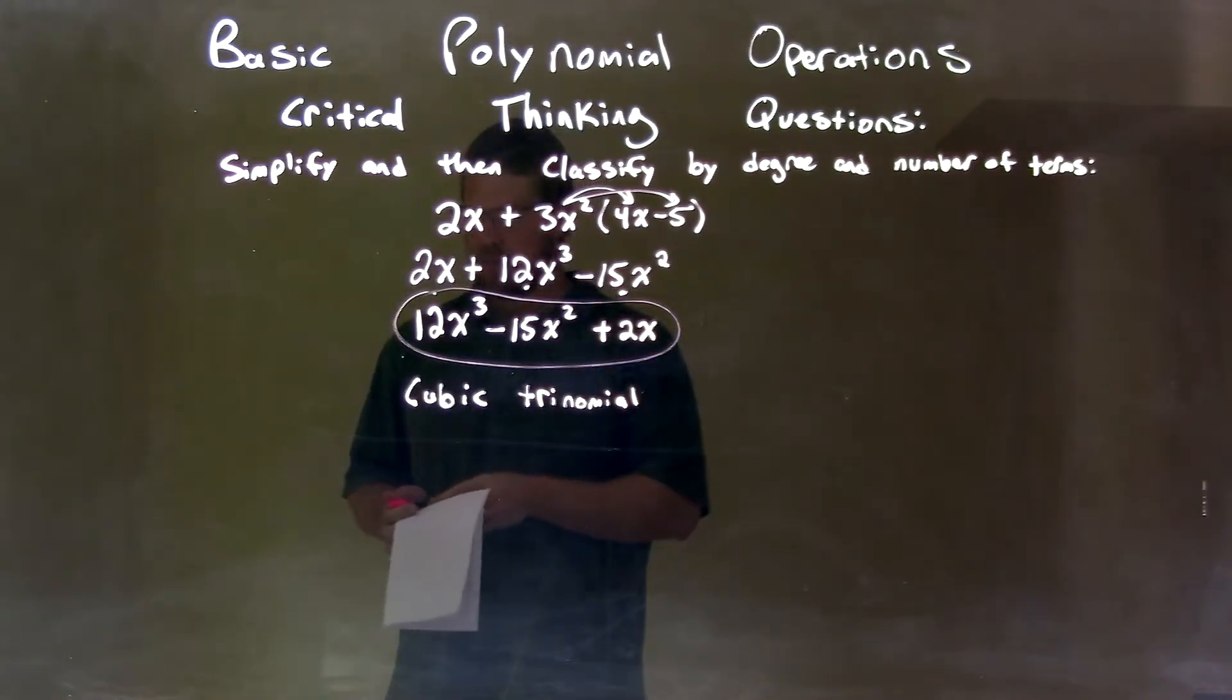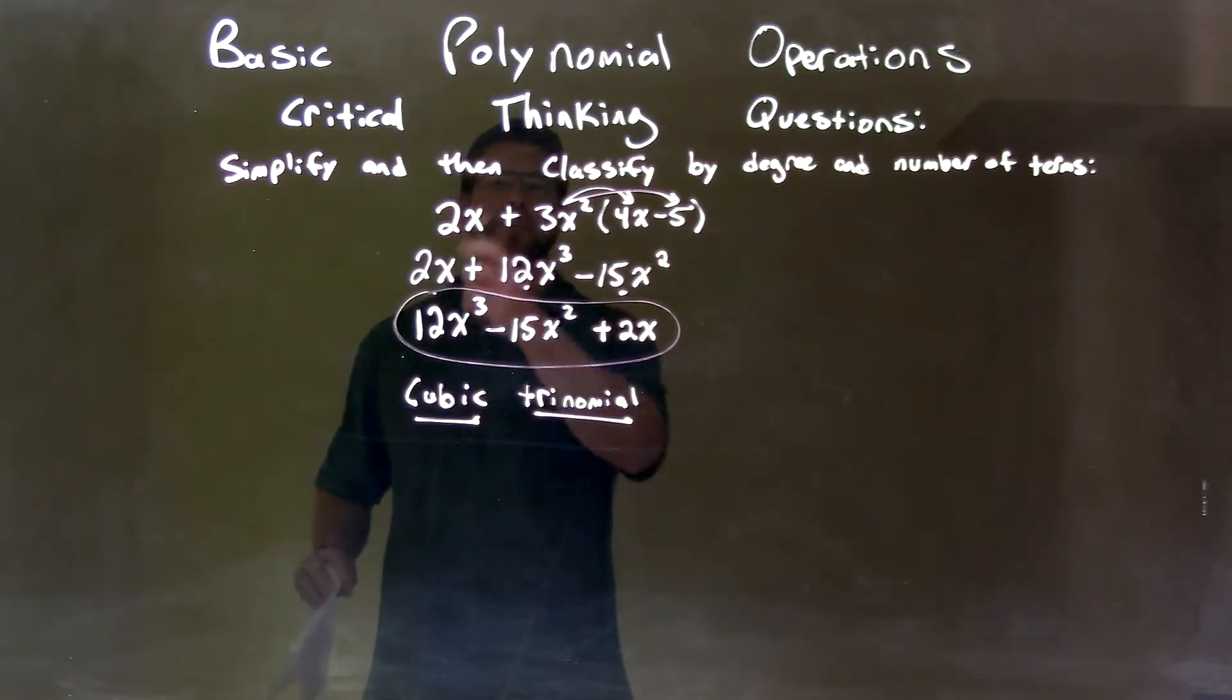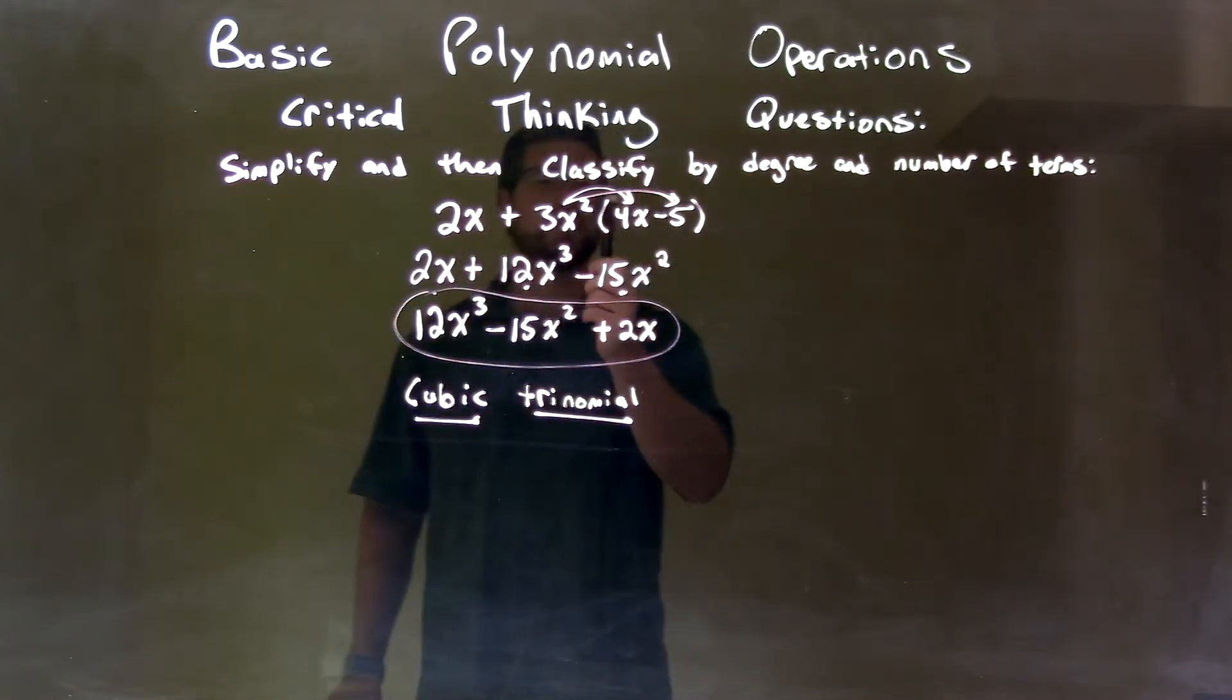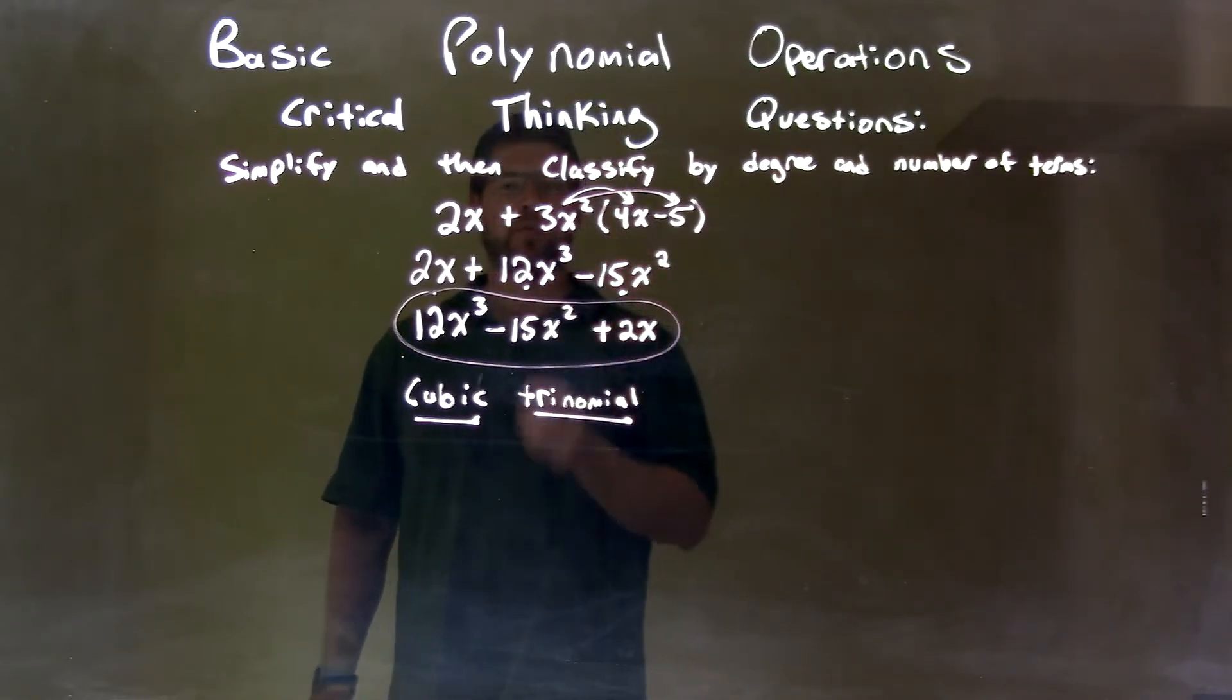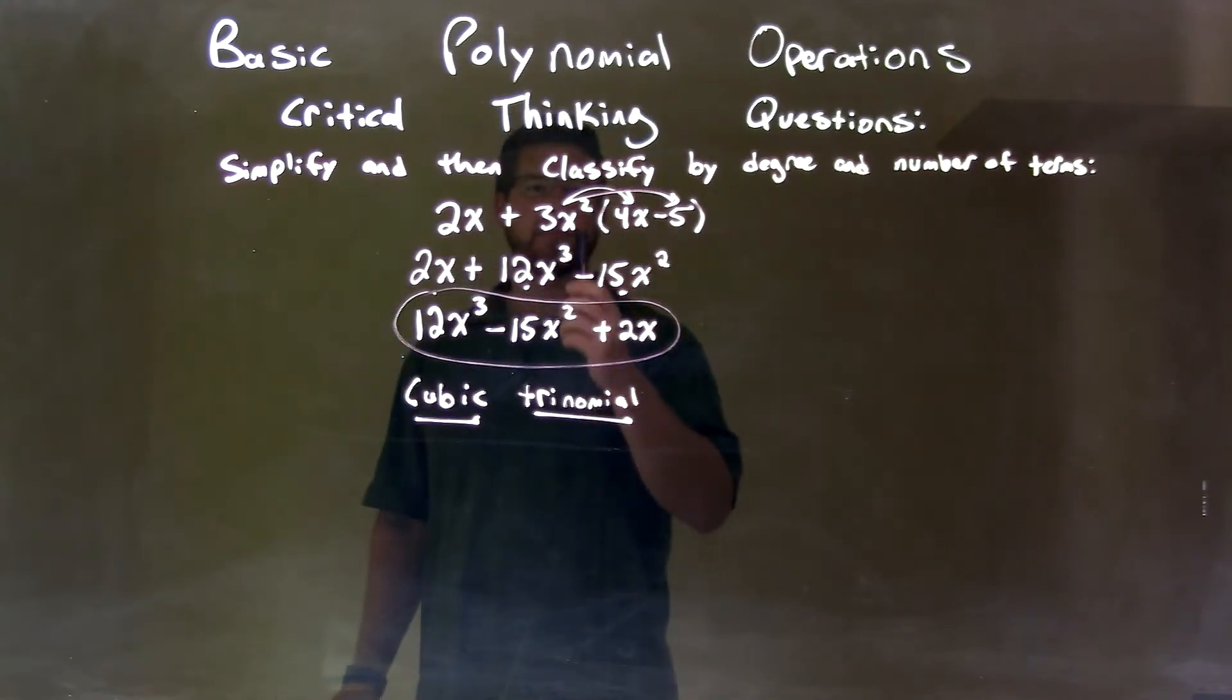So quick recap here. We're given 2x plus 3x squared times 4x minus 5, but the parentheses here is just next to the 3x squared, nothing to do with that 2x. So we first need to simplify this. Distribute the 3x squared to both parts. That gave me 12x to the third minus 15x squared.